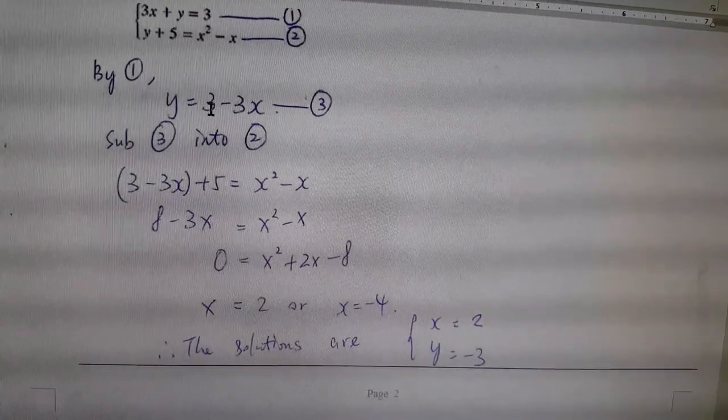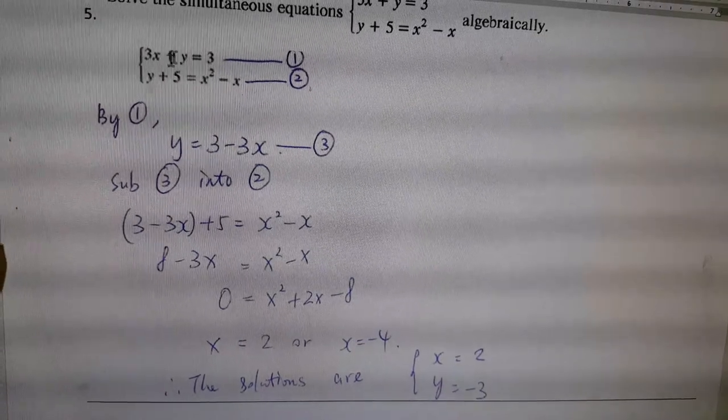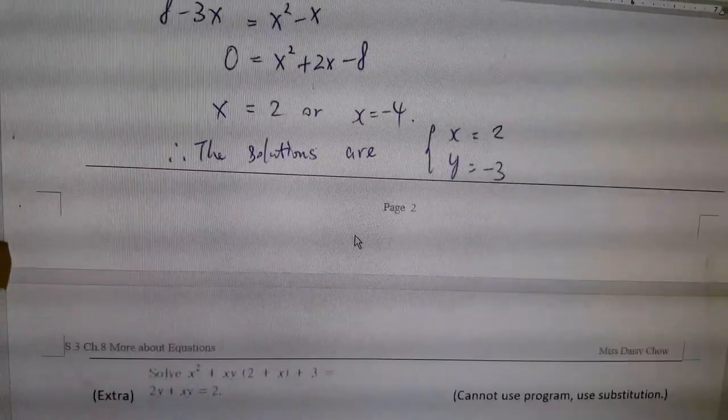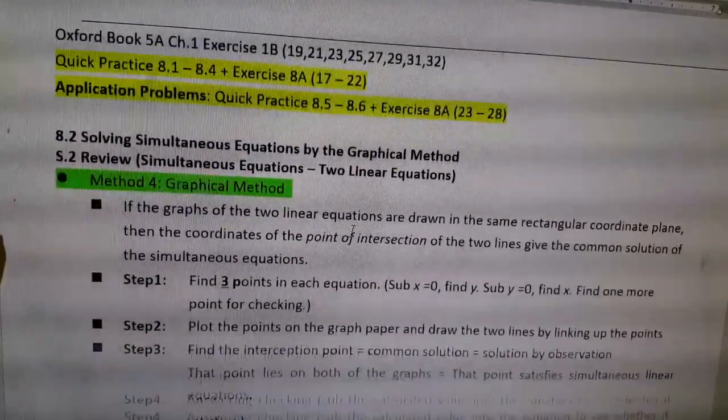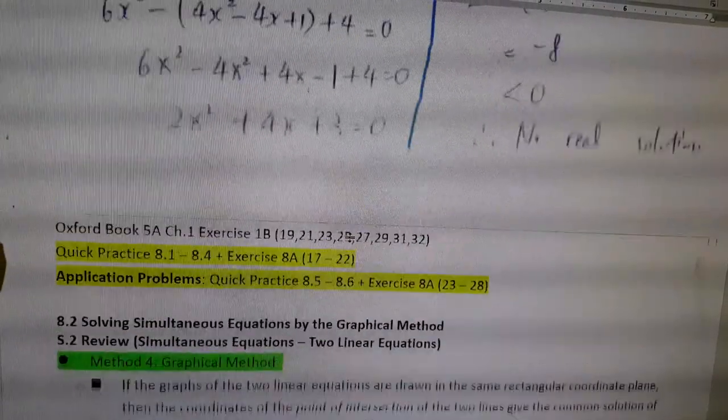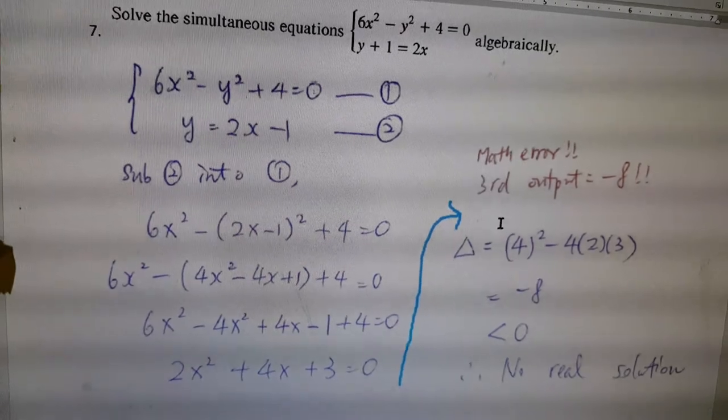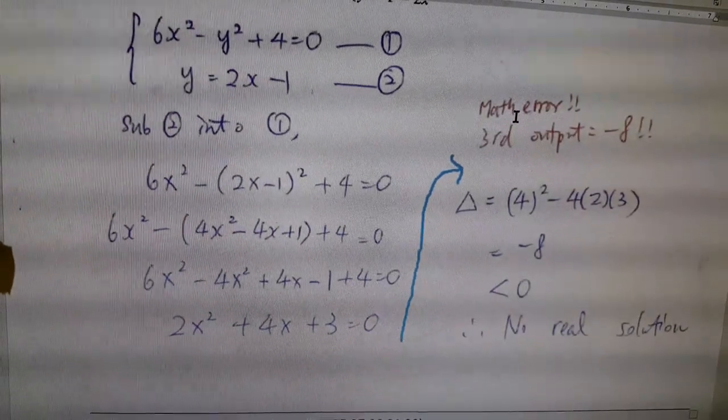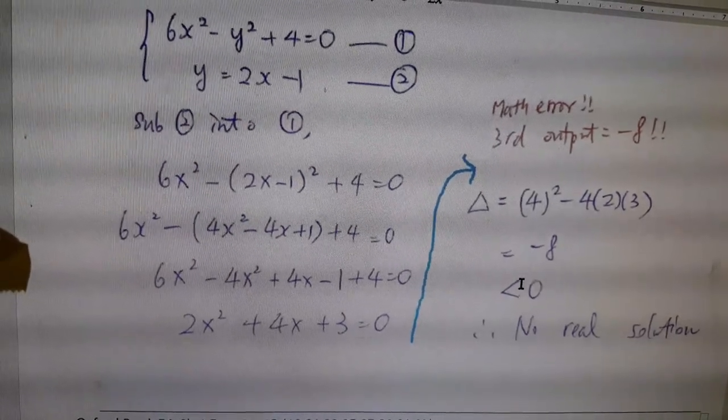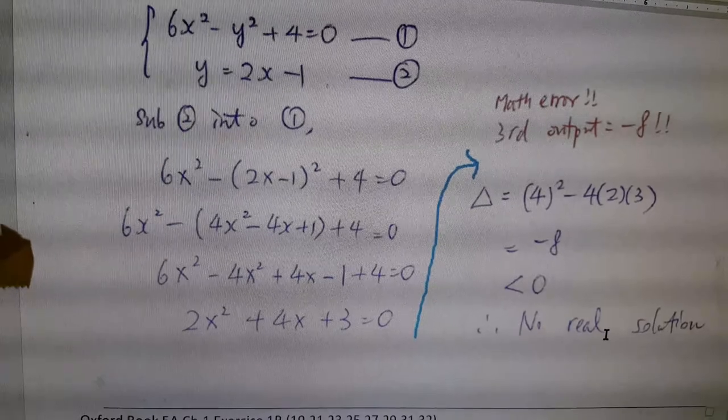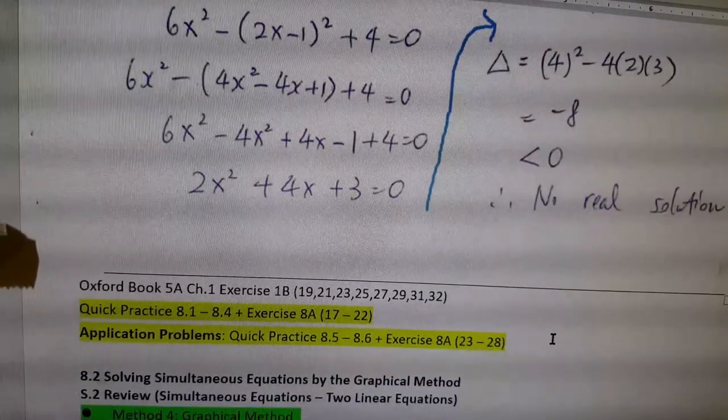You should start from the linear equation and then sub the first equation into the second equation to find the intersection point. After you do a lot of questions, sometimes when you solve it, you may not find the answer. When you press the calculator, you will have math error. So you should write down the discriminant is equal to negative x, which is smaller than zero, so no real solution or no intersection point, depends on what the question is asking.